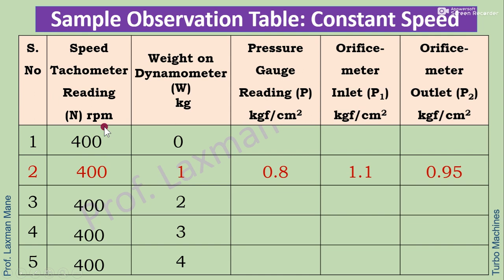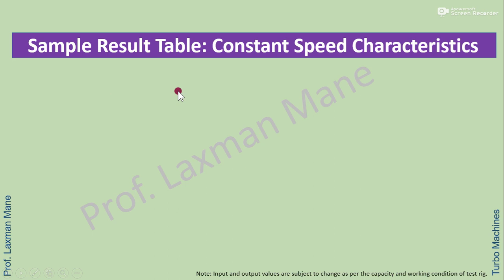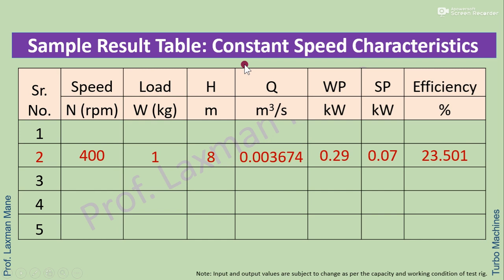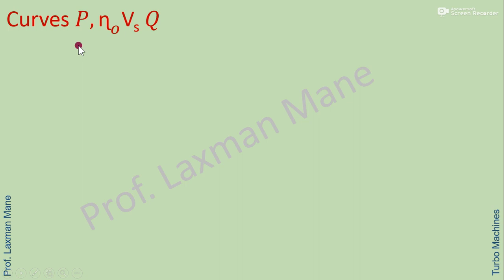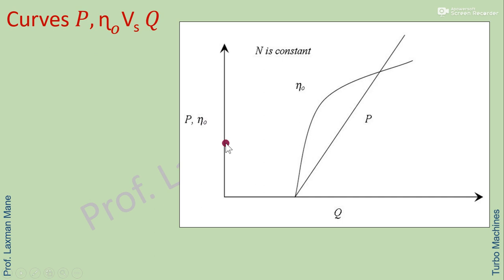A sample observation table for constant speed — say 400 RPM — is used for different loads. For 1 kg load, values of p, p1, and p2 are recorded, and calculations are done using the same formulas to find discharge, water power, shaft power, and efficiency. Curves are plotted between output shaft power, overall efficiency, and discharge.